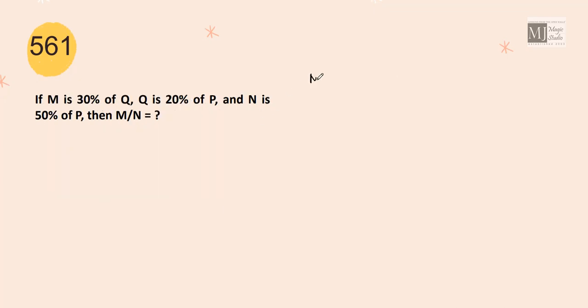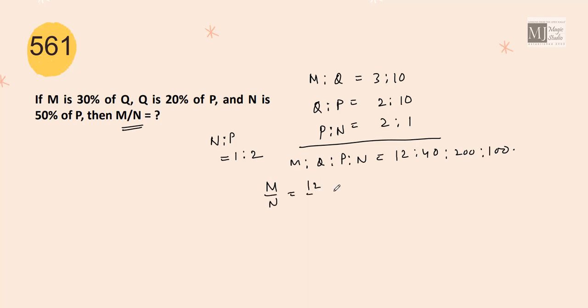If M is 30% of Q, that means M is to Q is 3 is to 10. If I take Q as 10, then M is 30% of 10, that is 3. Q is 20% of P. Q is to P is 2 is to 10. N is 50% of P. That means N is to P is 1 is to 2. If P is 2, then N is 50% of 2. So I am writing here P is to N as 2 is to 1. Now, if I combine them, I will get M, Q, P, N and that would be 12, 40, 100, 200. Now, what I require is M by N. So M by N equals 12 by 100, that is 3 by 25.